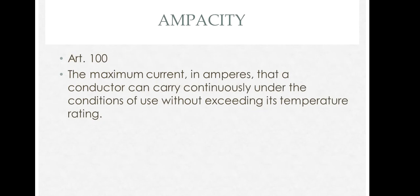There is a definition for ampacity: it is the maximum current in amperes that a conductor can carry under conditions of use without exceeding its temperature rating. The temperature rating is based on the insulation of the conductor. All conductors, depending on their insulation, have different temperature ratings from 60 degrees Celsius to 75 degrees Celsius to 90 degrees Celsius, depending on how the insulation is made and formed around the copper conductor.